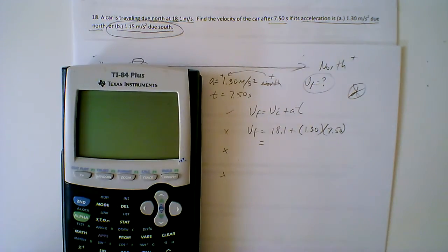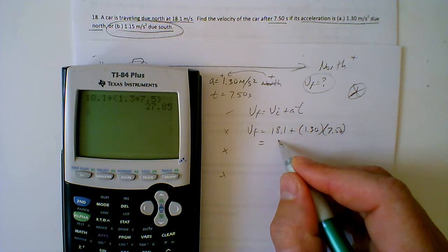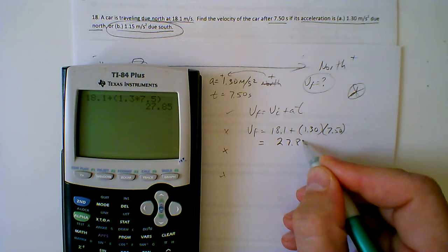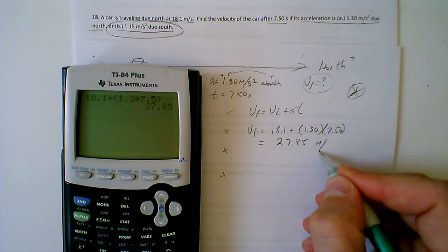Let's calculate that out. It's going to be 18.1 plus, full parentheses, 1.3 times 7.5, close parentheses equals, and we get a final velocity of 27.85 meters per second.